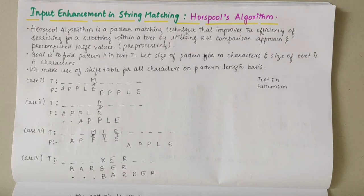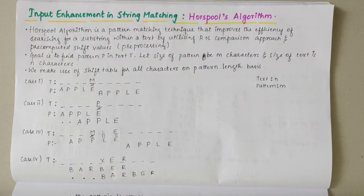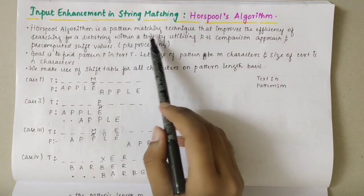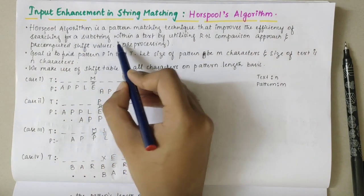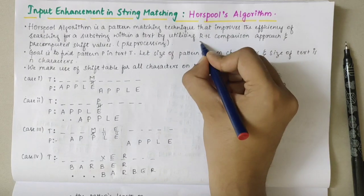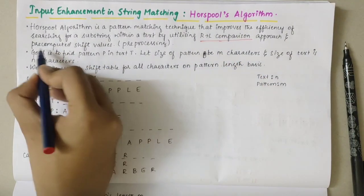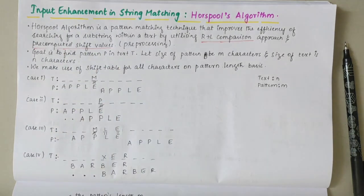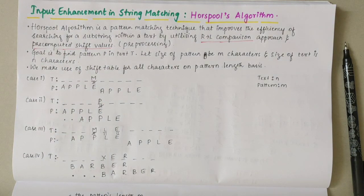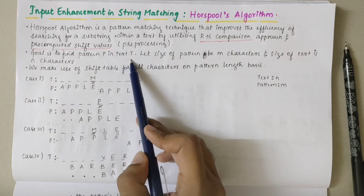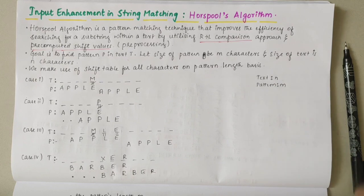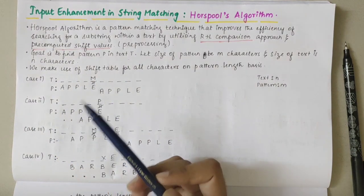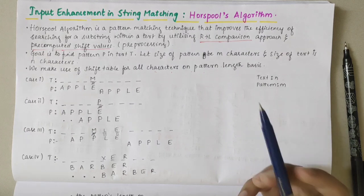In this video, we'll be looking into input enhancement and string matching — specifically the Horsepool algorithm. Horsepool algorithm is a pattern matching technique that involves efficiently searching for a substring within a text by utilizing a right-to-left comparison approach, along with pre-computed shift values. Our goal is to find pattern P in text T, where the pattern has M characters and the text has N characters. We make use of a shift table based on pattern length.